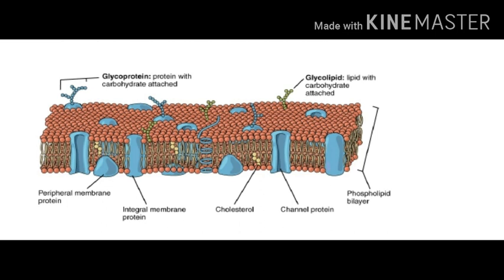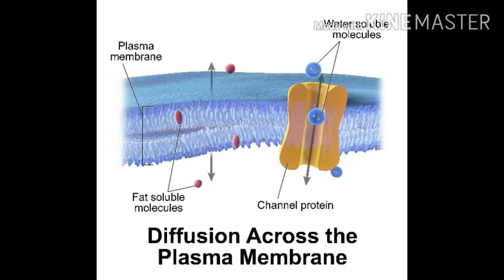Drug transportation is of two types. One is passive diffusion and filtration; another is specialized transport. Passive diffusion is simple transportation based on concentration gradient. If we use a lipid-soluble drug, it will diffuse across the membrane. If it is not lipid-soluble, it won't pass, so we use a filtration method to transport it across the cell.